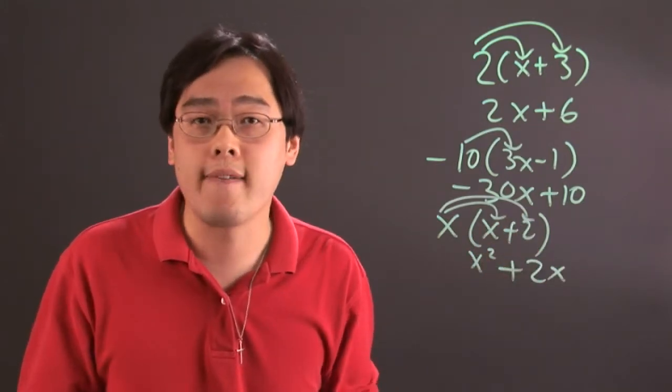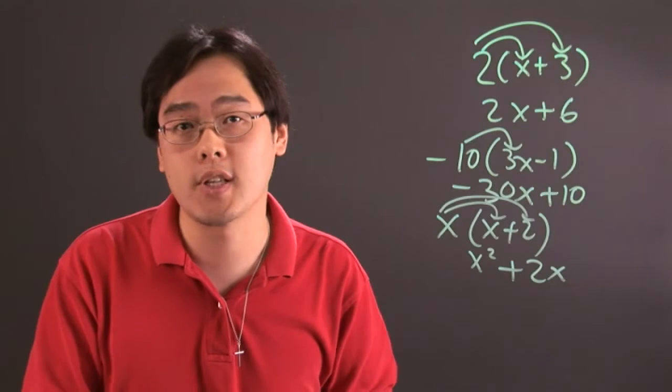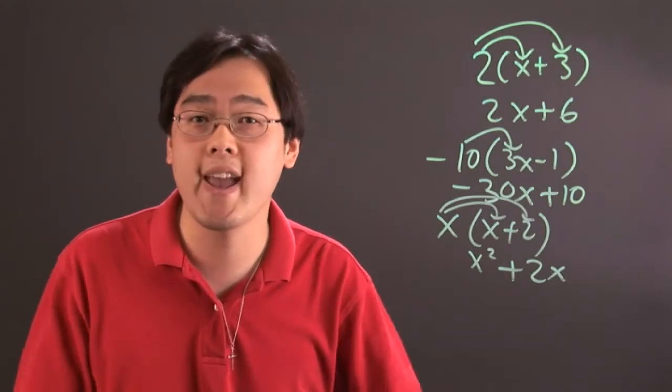So whenever you're multiplying by a factor you're multiplying by whatever term that's given to you. So I'm Jimmy Chang and that's how to multiply by a factor.